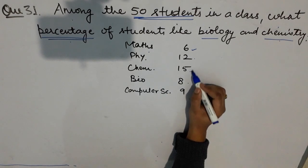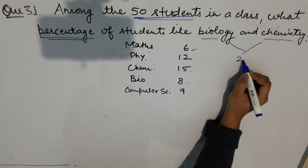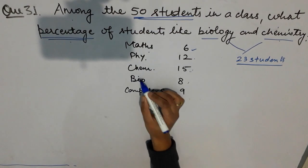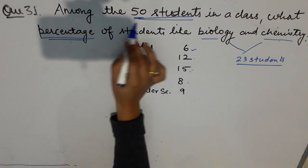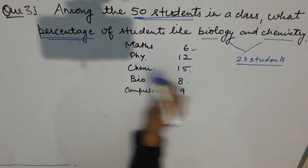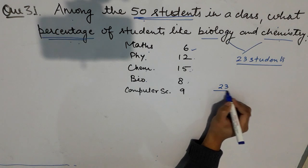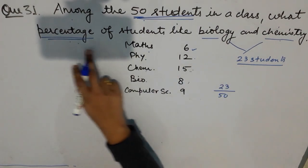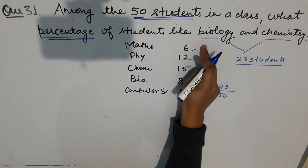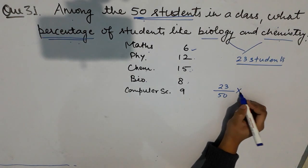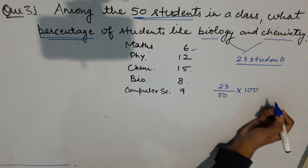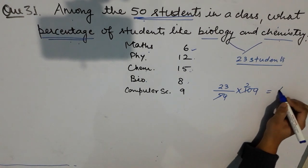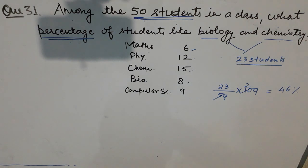So 15 plus 8 equals 23 — 23 students like biology and chemistry. Among the 50 students you have to find the percentage. In the denominator keep the total number of students, and in the numerator put the total number of students who like biology and chemistry, then multiply by 100 to find the percentage. Cancel it out — this gives 46 percentage.